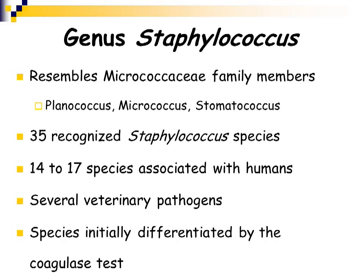The genus staphylococcus resembles the Micrococcaceae family members, which include the genera Planococcus, Micrococcus, and Stomatococcus. There are 35 recognized staphylococcus species. 14 to 17 of these have been associated with humans; however, only a few have actually been associated with causing human disease — and those are the ones we're going to focus on. There are also several staphylococcus species associated with animals, considered veterinary pathogens.